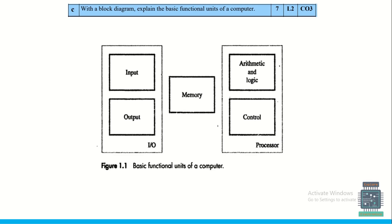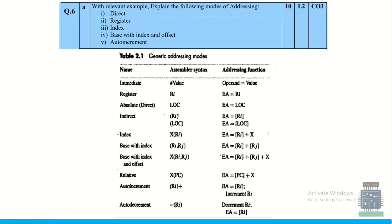To explain the basic functional units of a computer with a block diagram: the basic functional units consist of memory, I/O, ALU, and the control unit. You need to explain the functionality of each block with relevant examples.